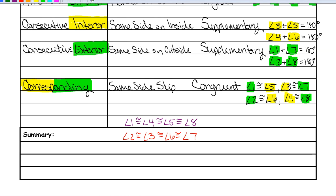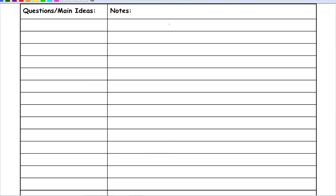Now we're going to go to the next page and work some example problems. Parallel lines cut by a transversal can look a little different — here the almost vertical lines are parallel and the horizontal line is the transversal. The first step is to always label everything. Here are all your angle numbers. You want to highlight your interior and exterior angles and circle how all of your angles relate to each other.